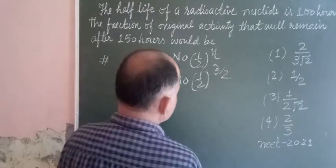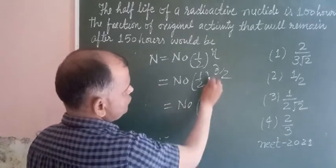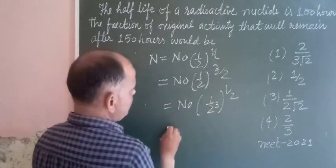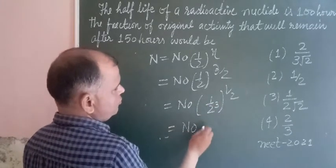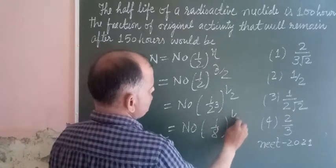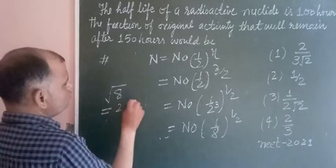So first we apply the exponent 3/2 to 1/2. This is power 3 and this is 1/2. We get 1 upon 8, which simplifies to 1/(2√2).